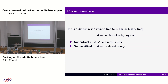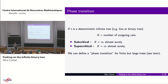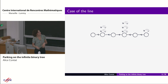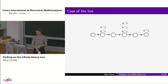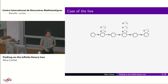We want to locate this phase transition — when does it happen depending on the car arrival laws? We can also define a phase transition for large finite trees. Let's start with the simplest case: the line. This is the parking model introduced in the literature by Konheim and Weiss in the 60s, who studied it for computer science considerations, specifically hash tables.